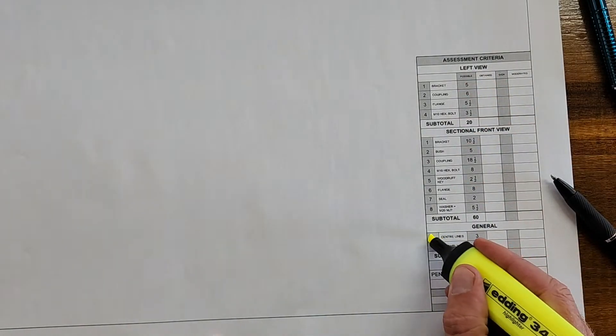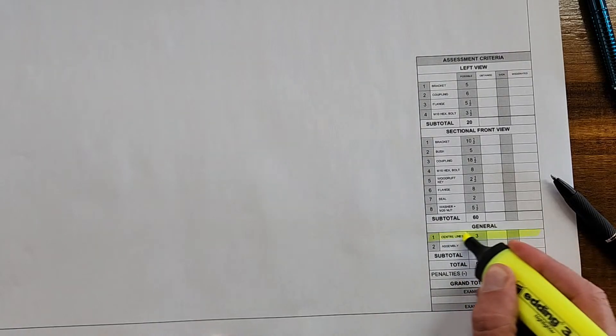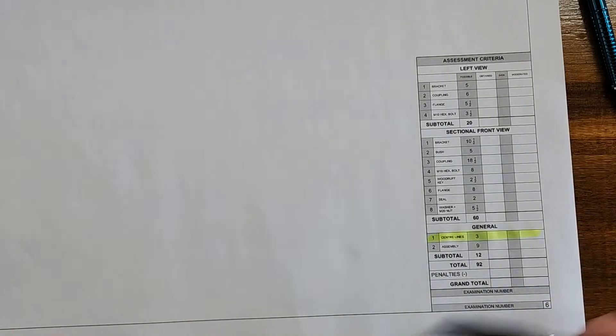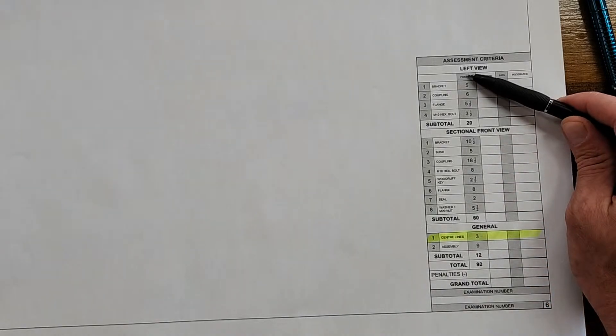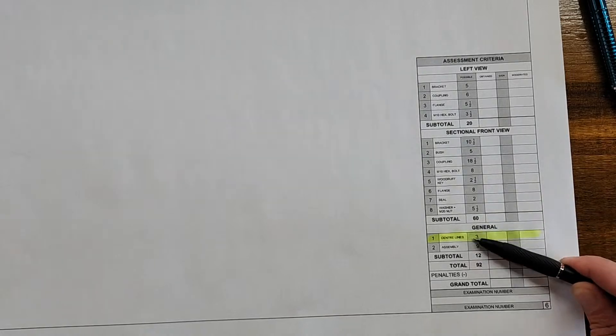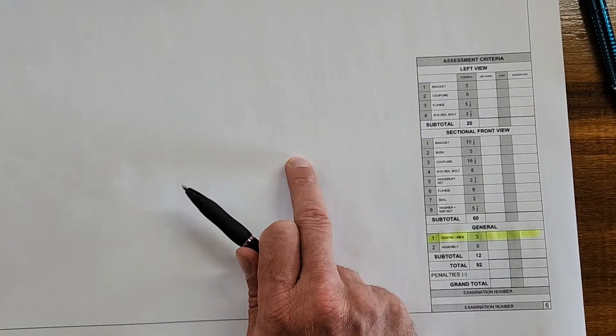And if you do have time make sure you double check it because there's one thing here that learners always miss: three marks for center lines. Now I don't want to be as bold to say this, but look here, even if you don't draw this drawing at all, please don't, you have to attempt it or finish it, but if let's say for instance you don't have any time left and there's no way for you to draw anything on here, draw center lines on this page because there's three marks for it.